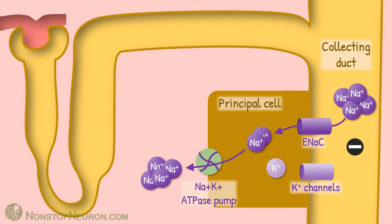And this brings us to potassium. It's a positively charged ion, so this negative charging of the lumen drives secretion of potassium from the cell into the lumen. Then this potassium is lost in urine. Thus, the more sodium that enters into the cell, the more the lumen gets negative and the more potassium is secreted.